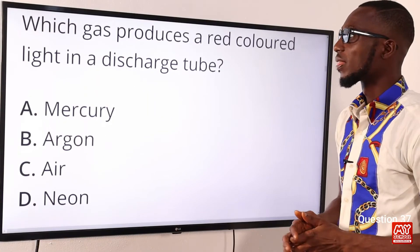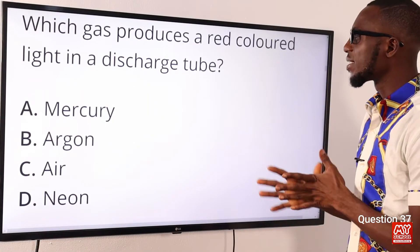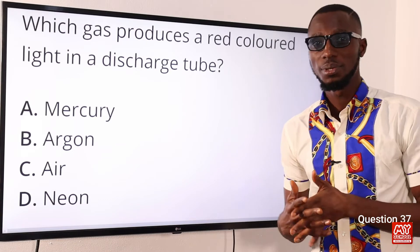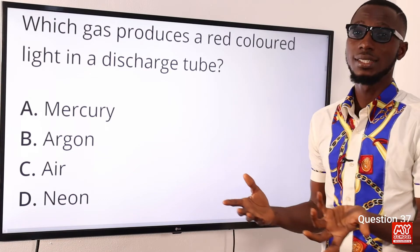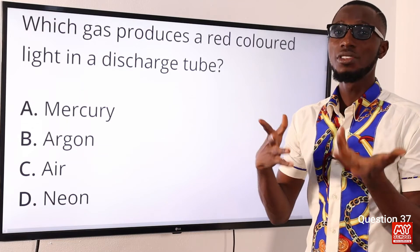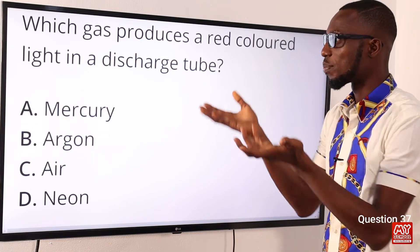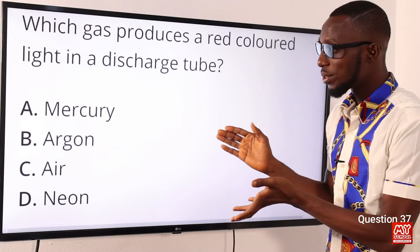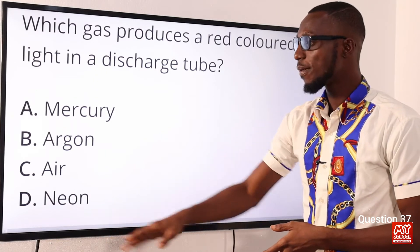Question 37. Which gas produces a red-colored light in a discharge tube? The most used gas here is the neon gas, and it gives a bright orange-red coloration. So, the correct option here to this question is option D for neon.